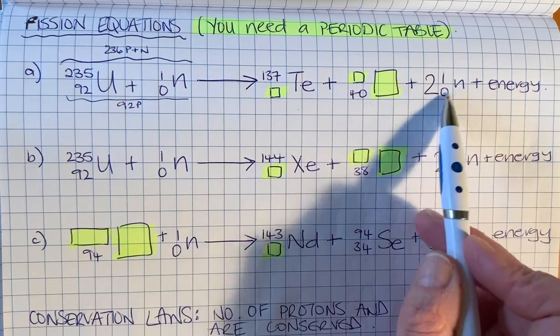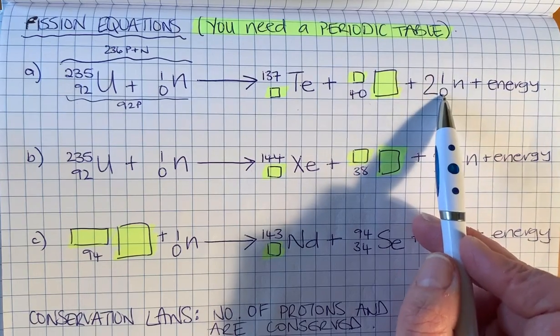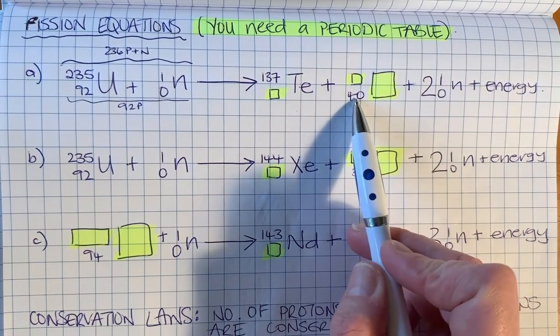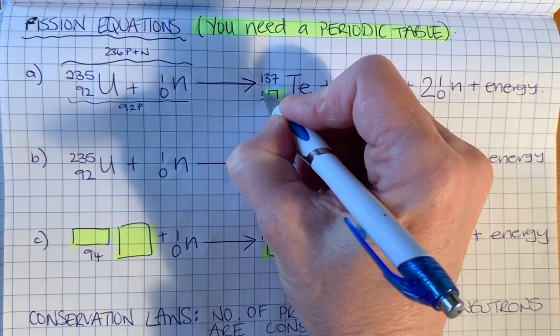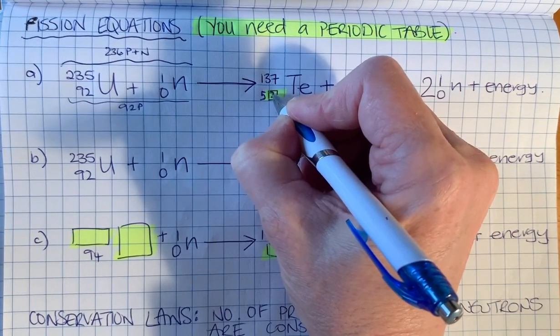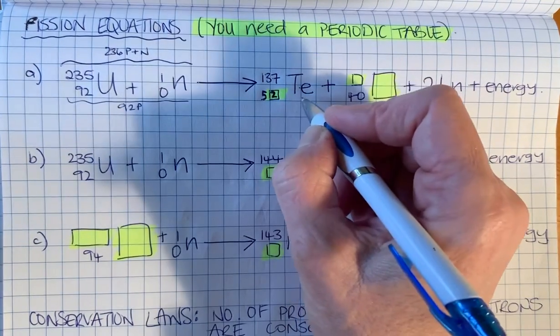We've got two neutrons there but no protons. We've got 40 protons here, so we must have 52 here. The 52nd element of the periodic table is tellurium.